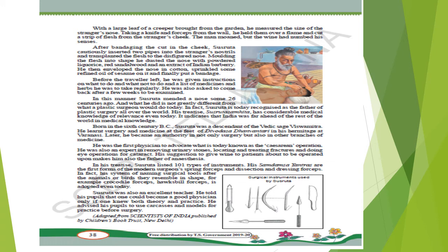In his treatise, Sushruta lists 101 types of instruments. His samdamsa yantras are the first forms of modern surgical forceps, dissection forceps, and dressing forceps. His system of naming surgical tools after the animals or birds they resemble in shape — for example, Crocodile forceps and Hawk forceps — is adopted even today. Sushruta was also an excellent teacher. He told his pupils that one could become a good physician only if one knew both theory and practice. He advised his pupils to use carcasses and models for practice before performing surgery.